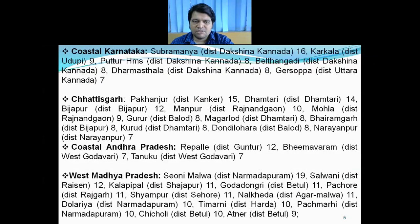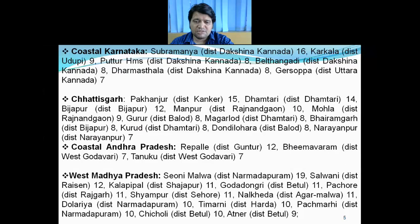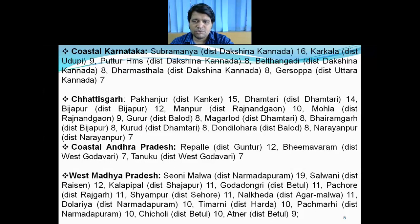16 and 15 centimeters of rainfall have been observed over west Madhya Pradesh. Narmadapuram district Seoni Malwa station has reported 19 centimeters of rainfall. Raisen district station Salhani has also reported 12 centimeters, and Shajapur district Kala Pipal has reported 11 centimeters of rainfall. Over Kanker district of Chhattisgarh, Pakhanjore has reported 15 centimeters, Dhamtari district has reported 14 centimeters, Bijapur 12 centimeters, and Rajnandgaon district station Manpur has reported 10 centimeters of rainfall.